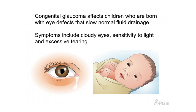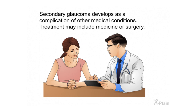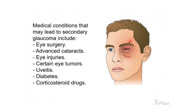Congenital glaucoma affects children who are born with eye defects that slow normal fluid drainage. Symptoms include cloudy eyes, sensitivity to light, and excessive tearing. Surgery is usually the best treatment, and the child has an excellent chance for good vision. Secondary glaucoma develops as a complication of other medical conditions; treatment may include medicine or surgery. Medical conditions that may lead to secondary glaucoma include eye surgery, advanced cataracts, eye injuries, certain eye tumors, uveitis, diabetes, and corticosteroid drugs.